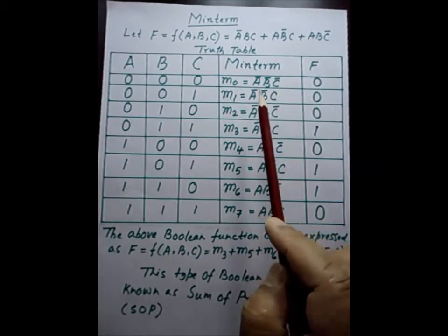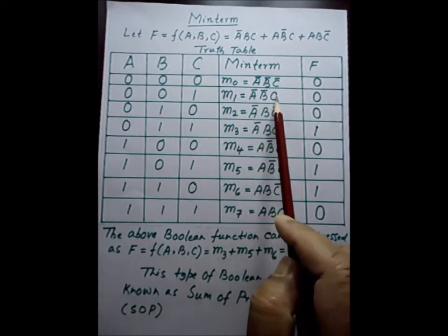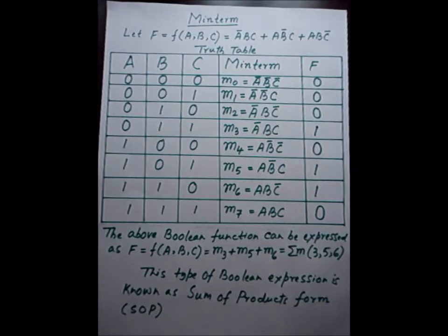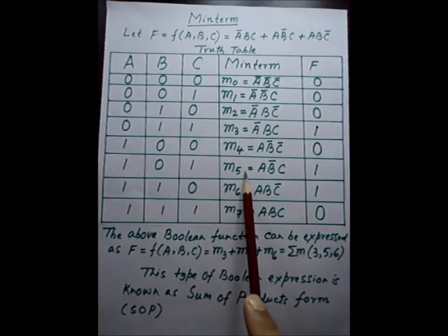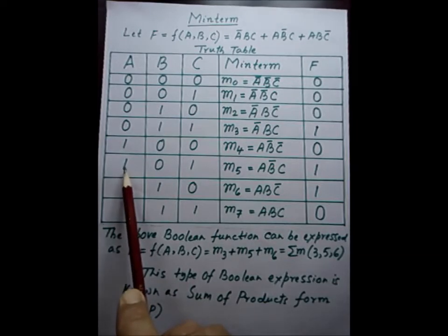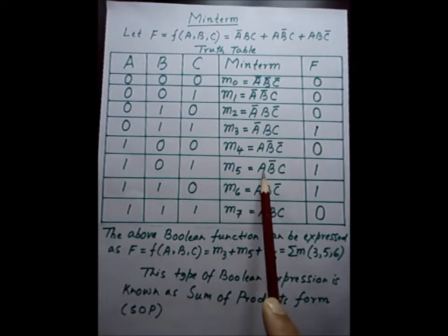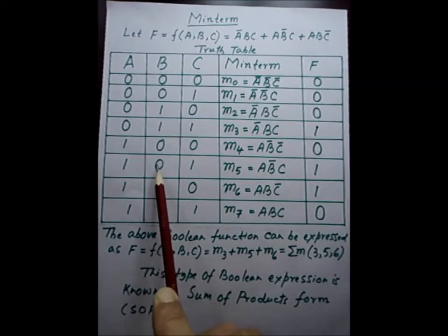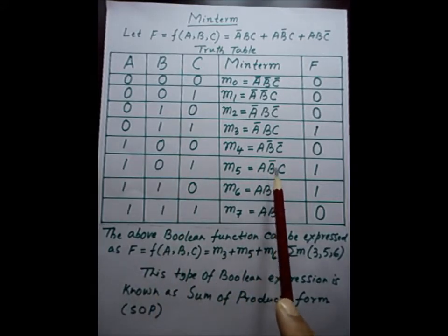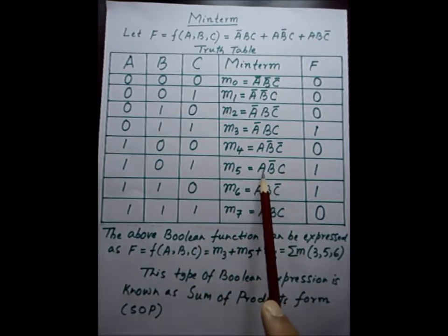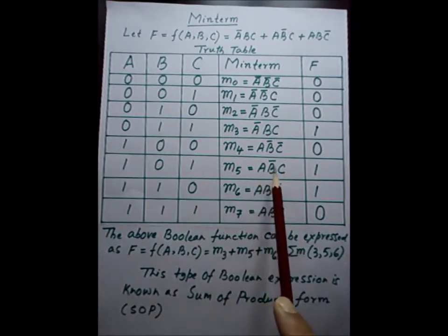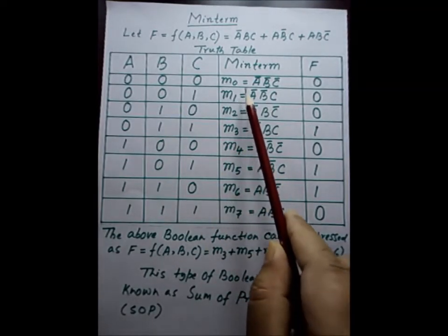In a similar way, all the other rows follow this rule. For example, for m5: a is assigned to 1, so there is no complement for a; b is assigned to 0, so complement of b; and c is assigned to 1, so no complement of c. The product of a, complement of b, and c gives m5. These are called the minterms.